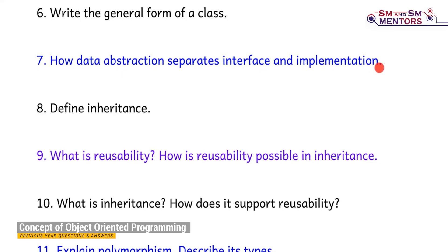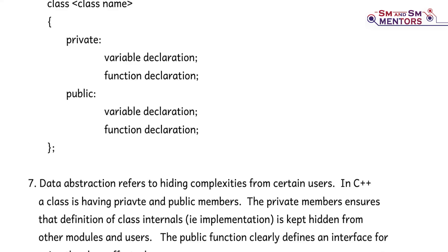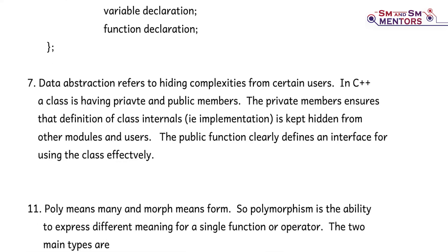How does data abstraction separate interface and implementation? Data abstraction refers to hiding complexities from certain users. In a class, there are private and public members. The private member keeps the implementation hidden from other modules and users, while the public function clearly defines an interface for using the class effectively.